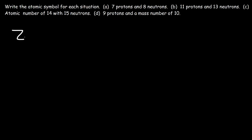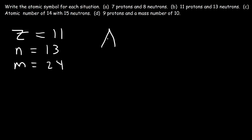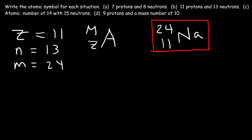For part B: the atomic number Z is 11 (the number of protons) and the number of neutrons is 13. So the mass number is 11 plus 13, which is 24. We put mass number 24 on top and atomic number 11 on the bottom left. Looking up atomic number 11 on the periodic table gives us sodium. So the answer is sodium-24. The most common isotope of sodium is sodium-23, since the atomic mass of sodium is about 22.99, but other isotopes like sodium-22 and sodium-24 also exist.